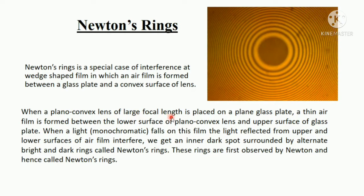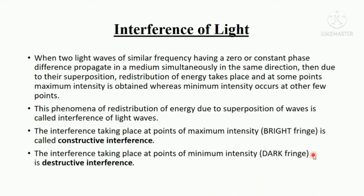When a plano convex lens of large focal length is placed on a plane glass plate, a thin film of air is formed between the two surfaces. When monochromatic light falls on this film, the light reflected from the upper and lower surfaces of the air film interfere and we get an inner dark spot surrounded by alternate bright and dark rings. They are known as Newton's ring as Newton observed it first.